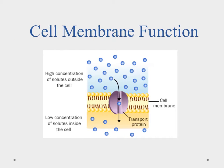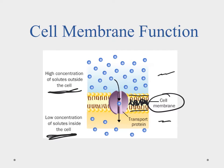Looking at our cell membrane again, we have the outside of the cell here and the inside here. The phosphates line up, and the lipids form this barrier that doesn't allow things to travel through in water. We also have these transport proteins. You can see there's a higher concentration of solutes outside and a low one inside, so through the process of diffusion this particle is going to get back into the cell through the transport protein — these are like windows or doors that allow things to get in and out.